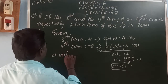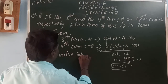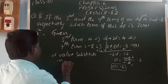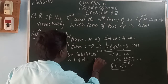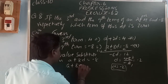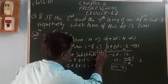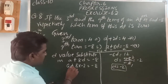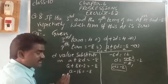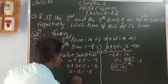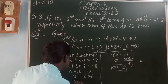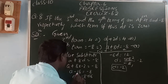So, here, we substitute the D value into A plus 8D is equal to minus 8. So, A plus 8 into minus 2 is equal to minus 8. Plus into minus gives minus. So, A minus 16 is equal to minus 8. Minus 16 is going to the right side as plus. So, A is equal to minus 8 plus 16. Minus 8 plus 16 is 8. So, the first term is 8.